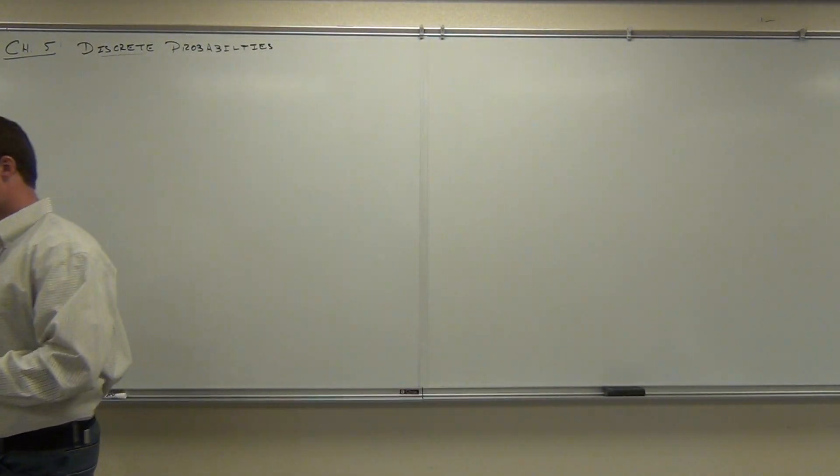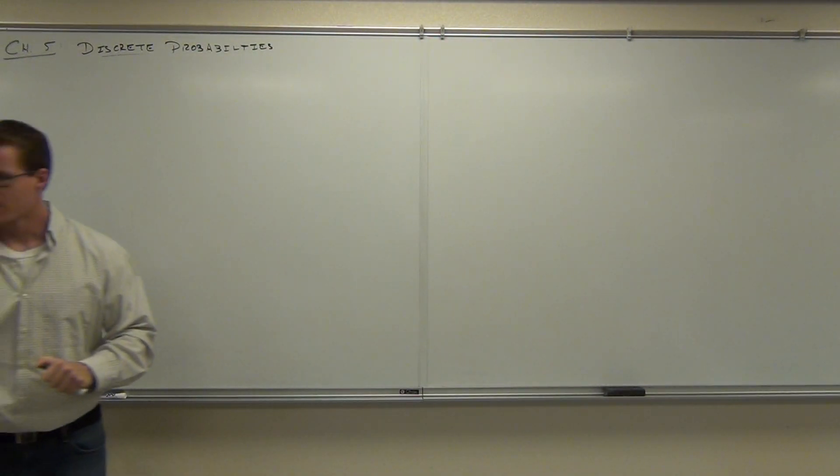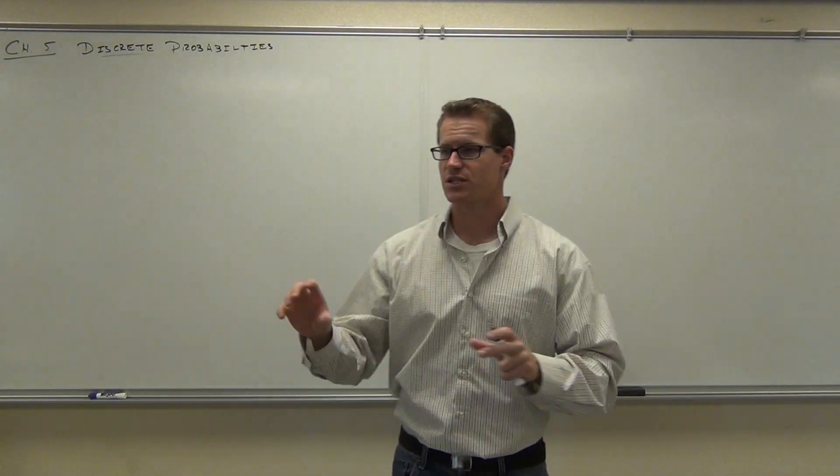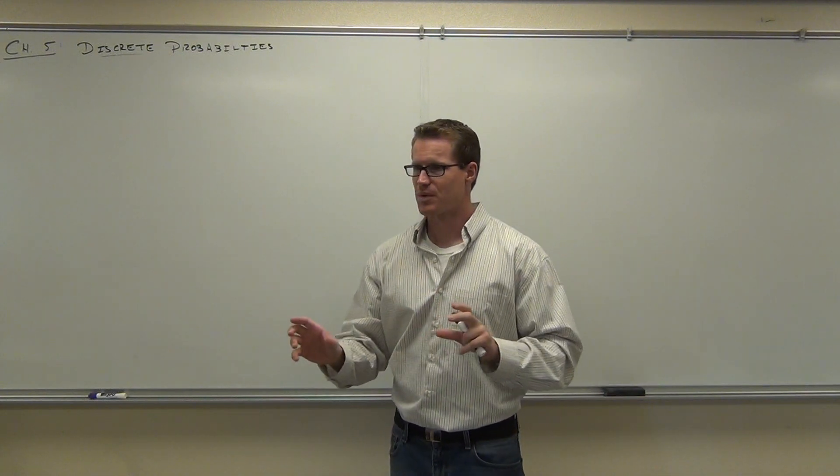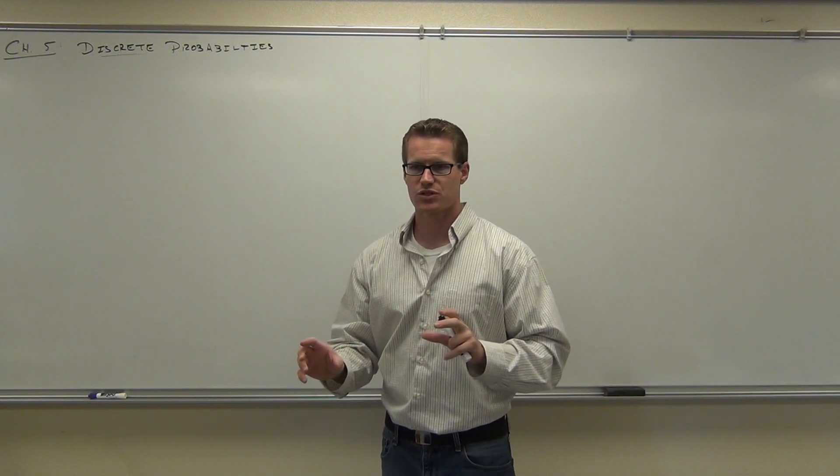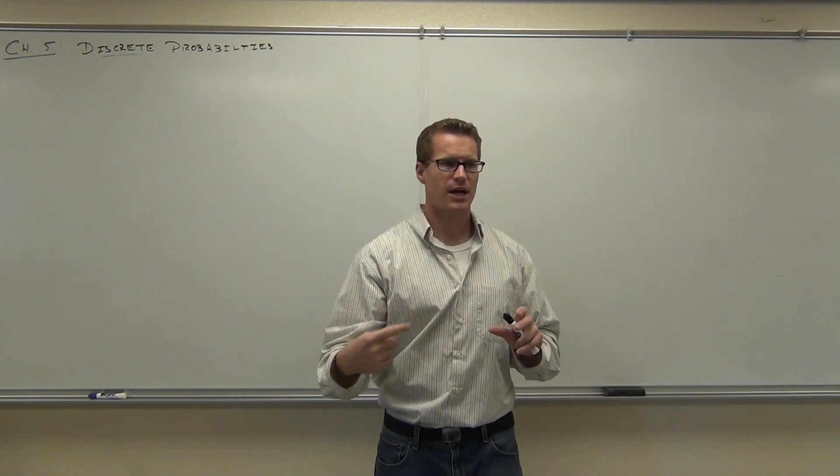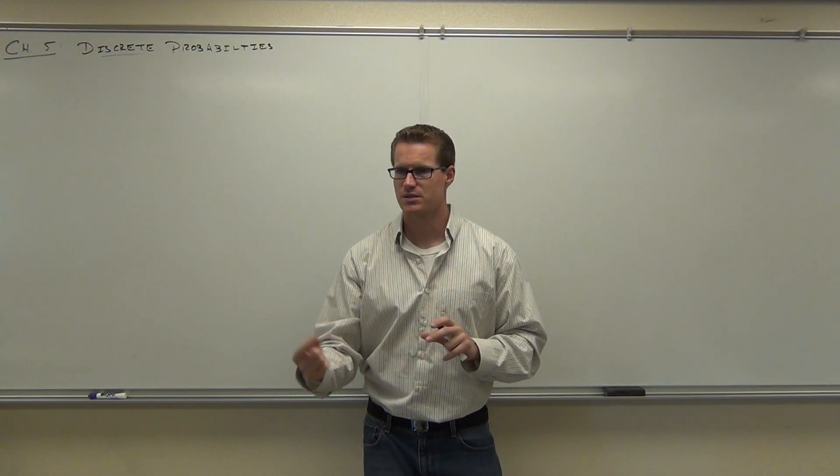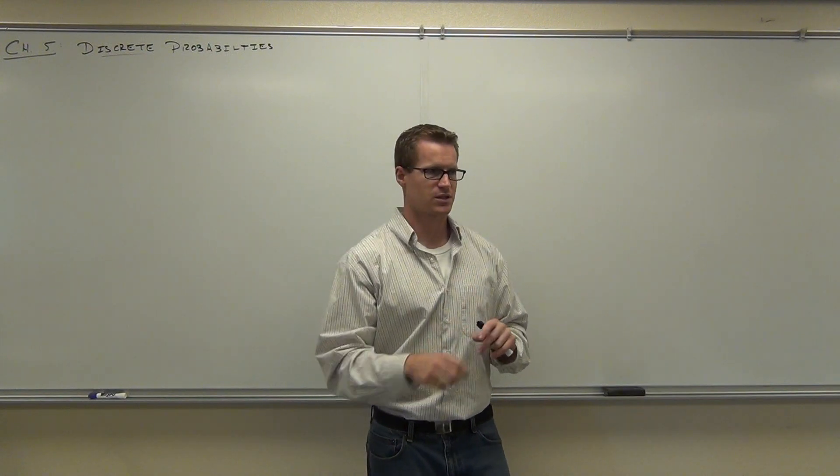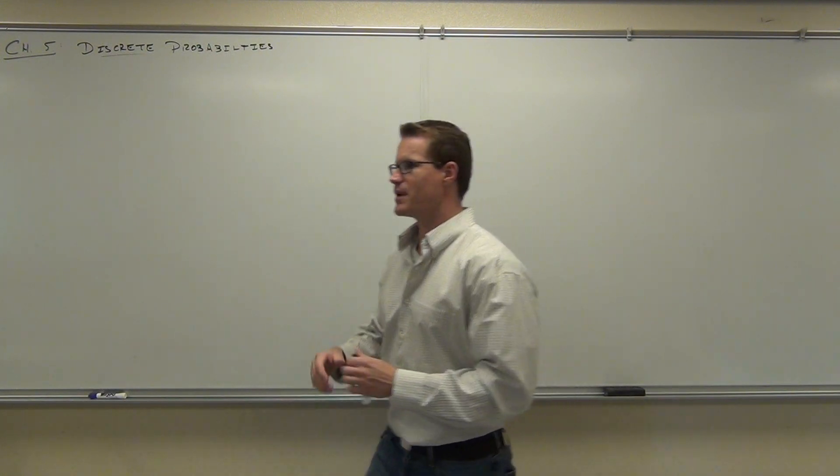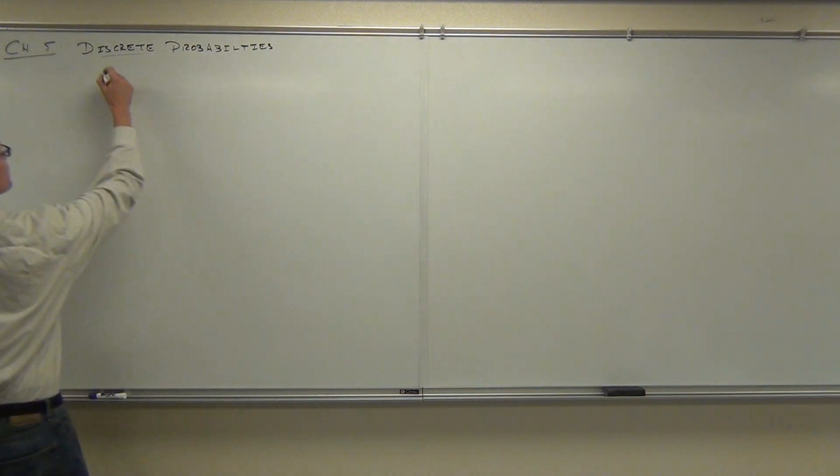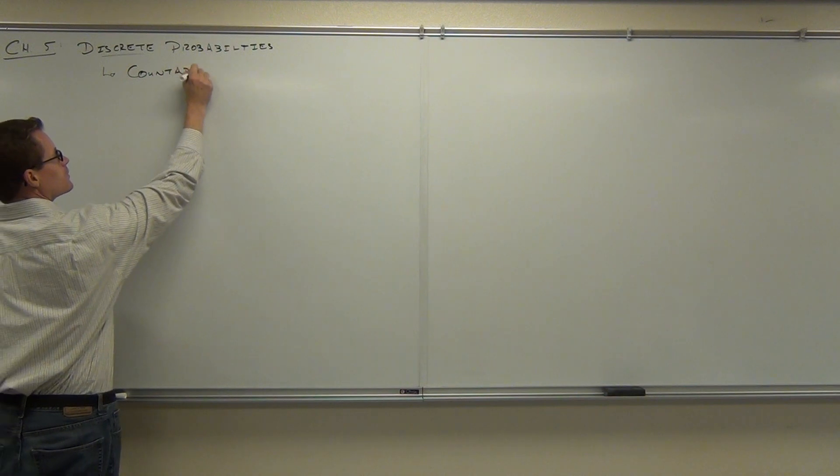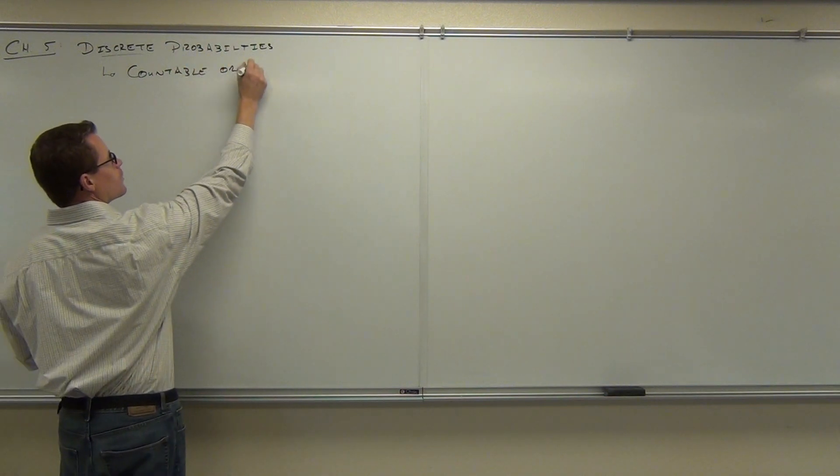Okay, so Chapter 5, we're still talking about probabilities, but specifically we're talking about discrete probabilities. Do you remember what discrete versus continuous actually meant? One of these would be discrete. The number of people in this classroom is either discrete or continuous. The number of people in this classroom would be considered definitely discrete because it's countable or it's finite. That's what discrete meant. So discrete, we're talking about is countable or finite.